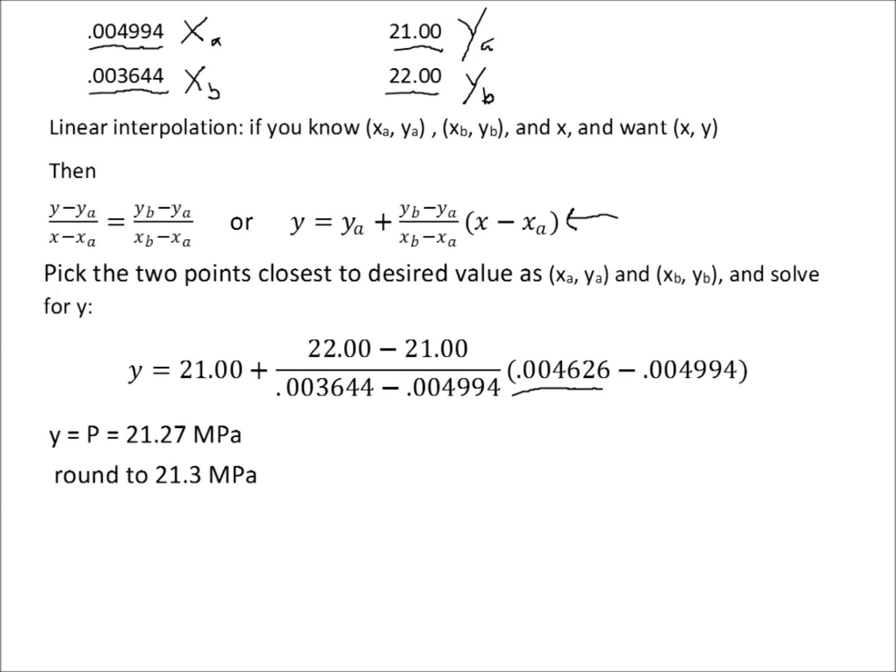If you remember on our graph, we estimated that it was going to be something a little less than 21.5 megapascals. The exact number that we get confirms that we're on the right track here. Our graph and our equation match up. If the graph and the equation give very different results, then that's a clue that something is wrong and you need to go back and check your numbers.